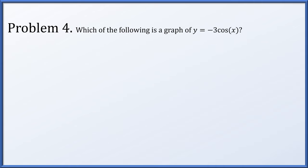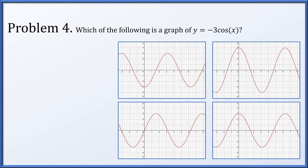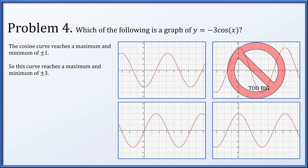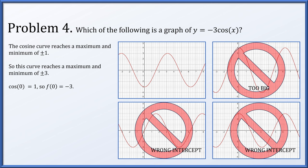In problem 4, which of the following is a graph of y = -3cos(x)? The cosine curve by default reaches a max and min of ±1. This is being multiplied by -3. So when the original cosine reaches its maximum of 1, this reaches its minimum of -3. And when the cosine reaches its minimum of -1, this will reach its maximum of 3. The max and min are ±3. One graph goes up and down to ±4, which is too big. Of the remaining curves, the cosine of 0 is 1, so f(0) = -3·1 = -3. We're looking for an intercept of -3, and the only remaining option is the one in the upper left.